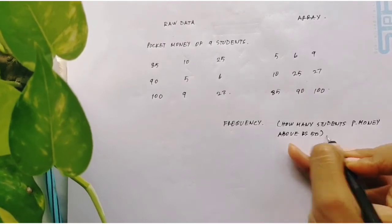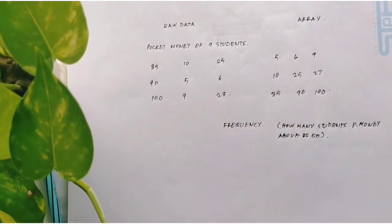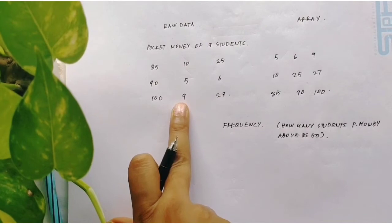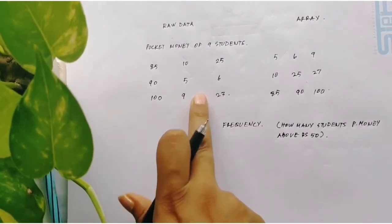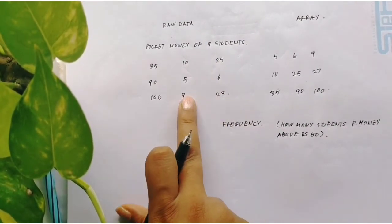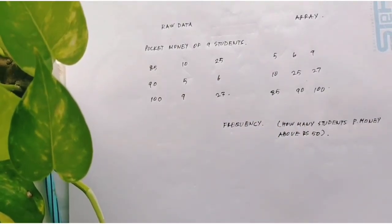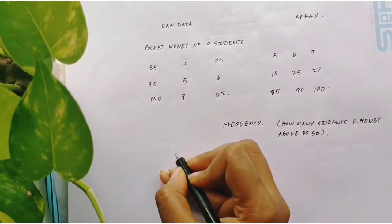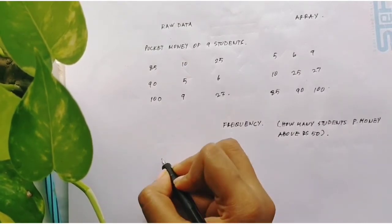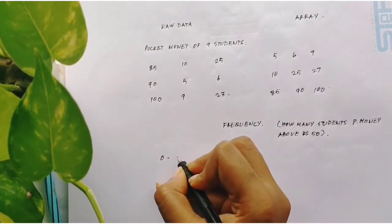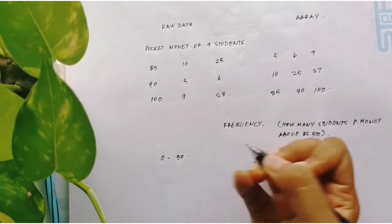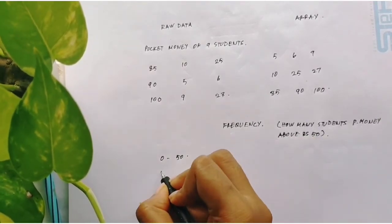If I want to know that, I have to convert them into groups first, and then only I can know how many of the students fall in each group. So first I have to convert them into groups. For that, let me consider here two groups: say 0 to rupees 50 first group, second group say 50 to 100.